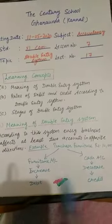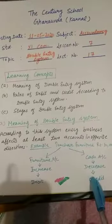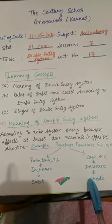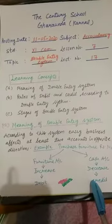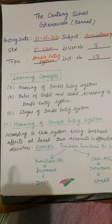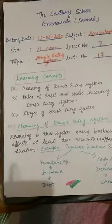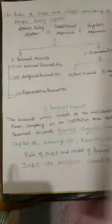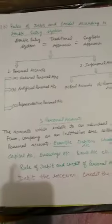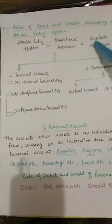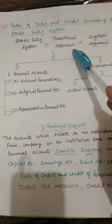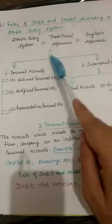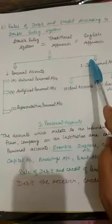So what is debit and what is credit? We can understand debit and credit with some rules. The rules of debit and credit according to the double entry system are based on the traditional approach and the English approach. We will divide accounts into two parts: first, personal account; and second, impersonal account.